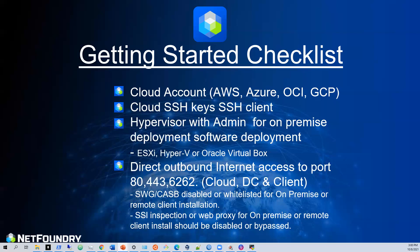Another thing you should consider: you have to have direct outbound access for all the software on ports 80, 443, and 6262 going outbound. If you have any type of secure web gateway, CASB, SSL inspection, or web proxying, you want to have that disabled or bypassed — whitelisted in some way so that we can get clean visibility out to the internet.